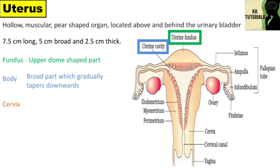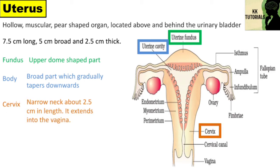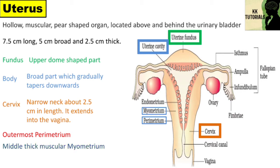The cervix is the narrow neck about 2.5 cm in length that extends into the vagina. Internally, the uterine wall can be distinguished into three layers: the outermost perimetrium, the middle thick muscular myometrium made up of thick smooth muscles, whose vigorous contractions cause labor during parturition, i.e. during childbirth.